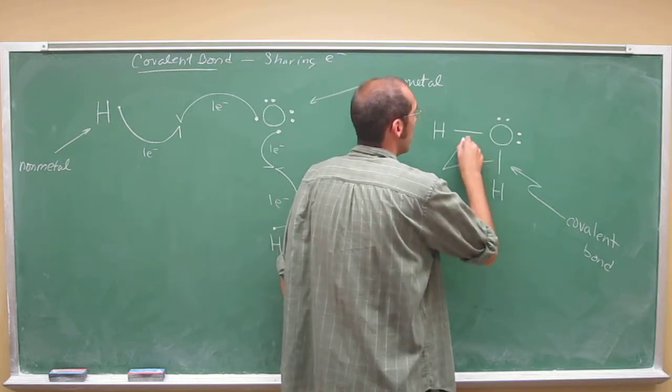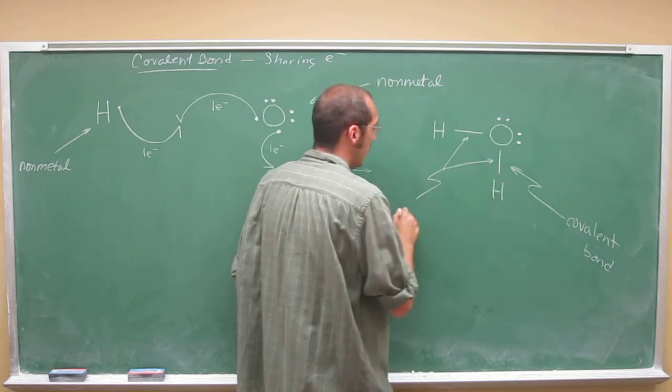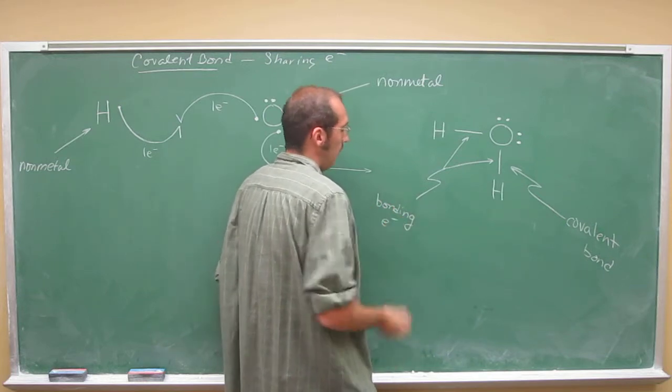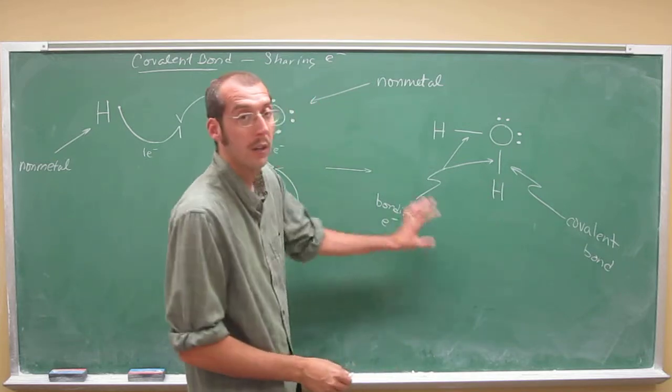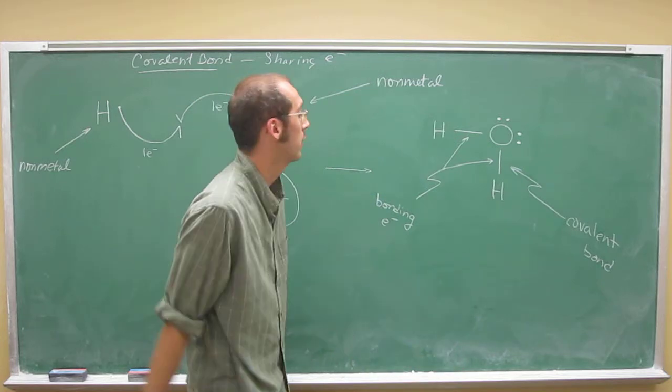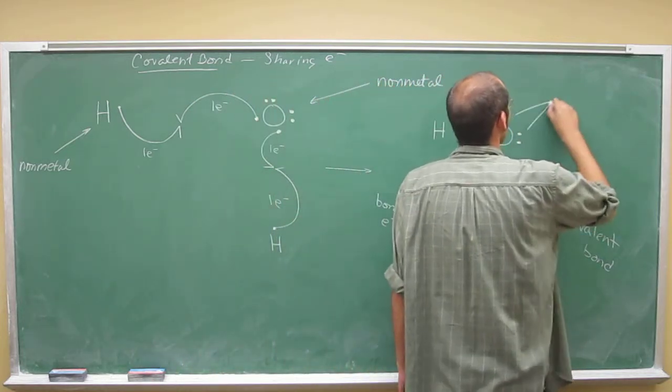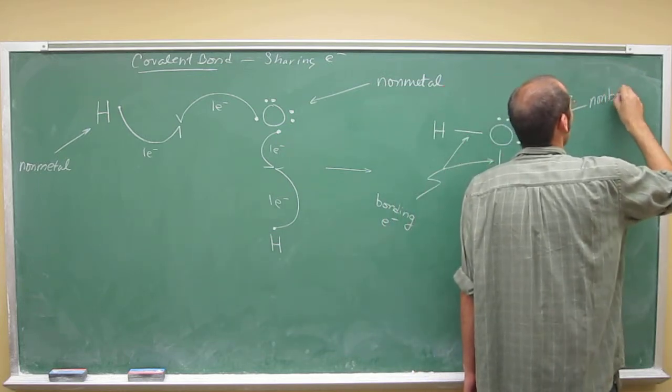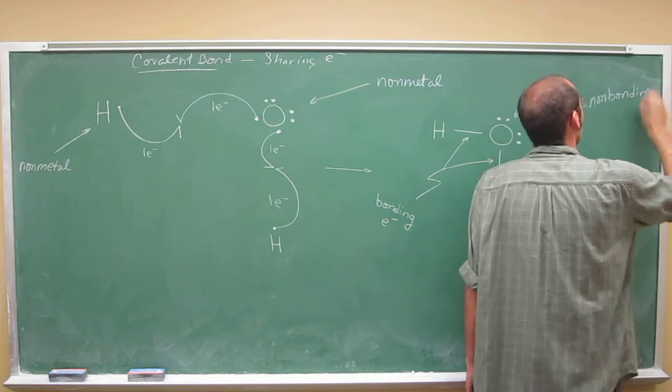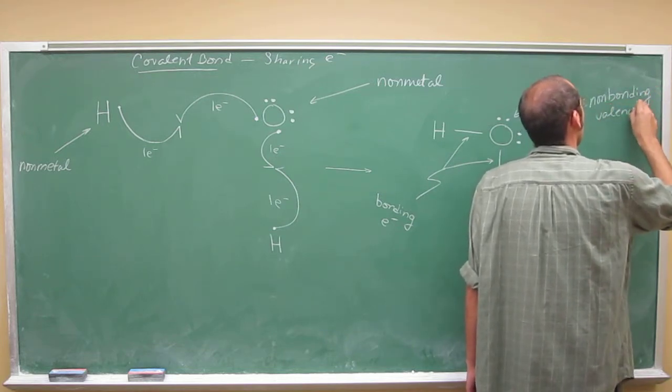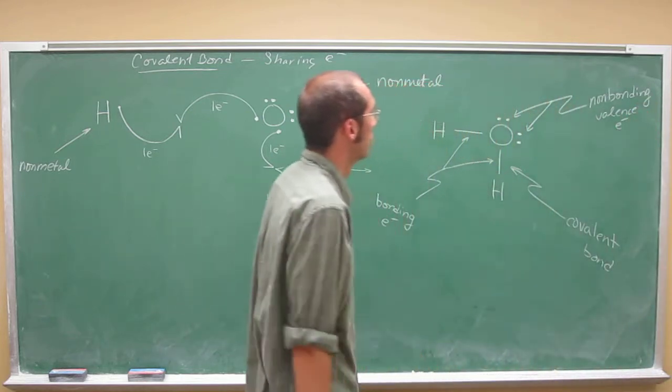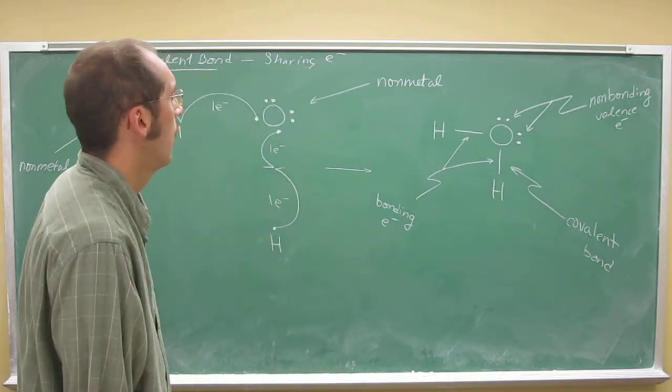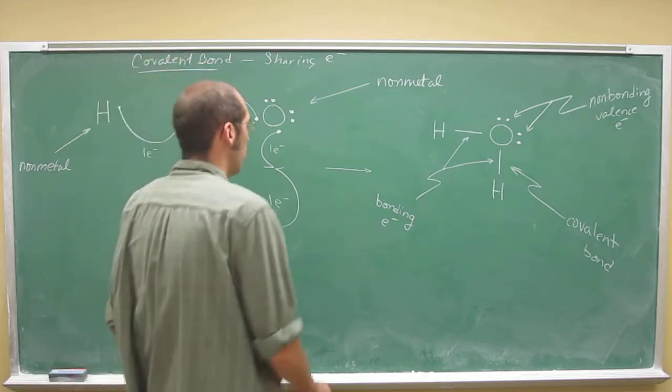These electrons, the four electrons that are in those bonds, we call bonding electrons or bonding valence electrons. So if it asks you how many bonding electrons are there around the central atom, you would say four bonds.